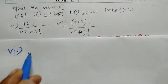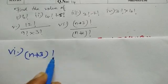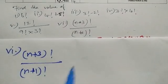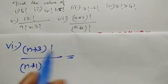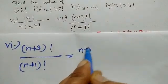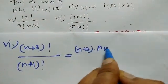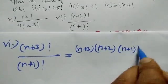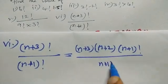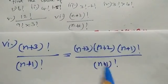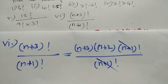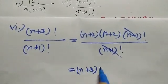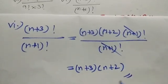Sixth one: n plus 3 factorial by n plus 1 factorial equals n plus 3 factorial, which is n plus 3 into n plus 2 into n plus 1 factorial, all divided by n plus 1 factorial. N plus 1 factorial cancels, remaining is n plus 3 into n plus 2.